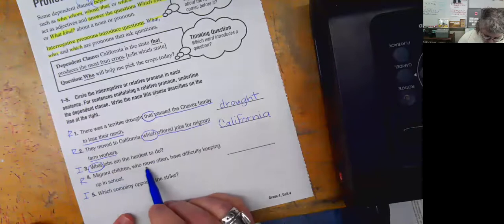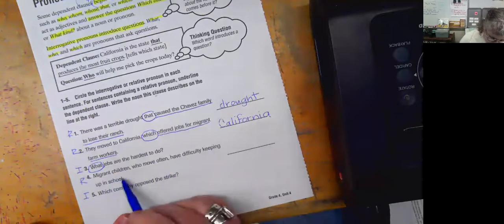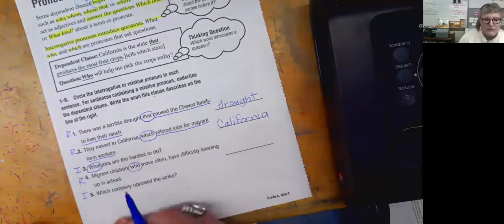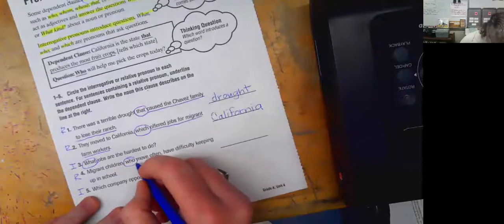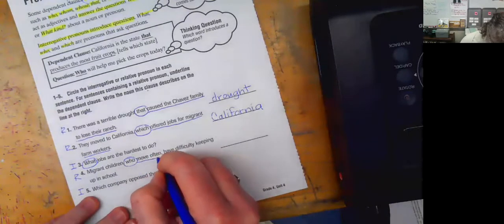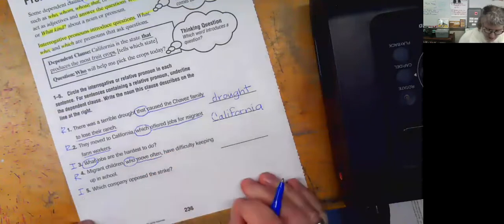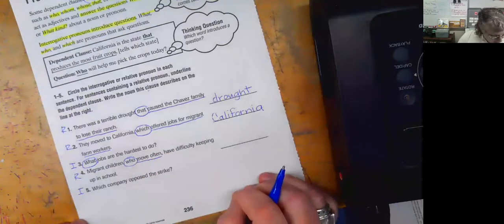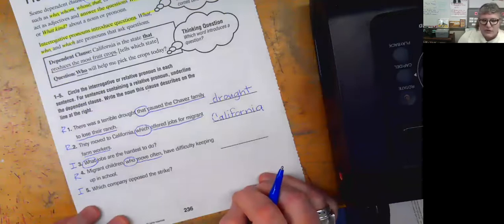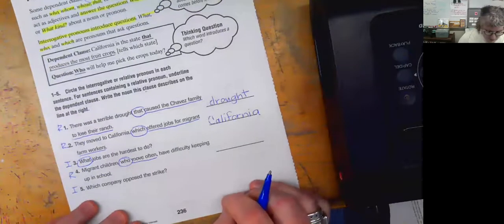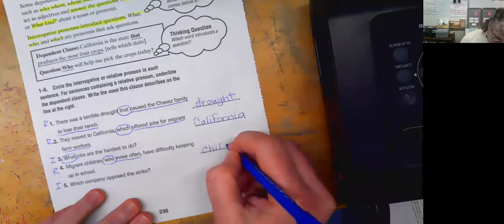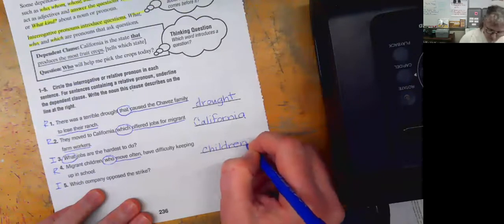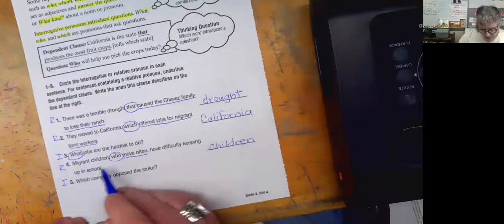Migrant children who move often have difficulty keeping up in school. Who? And this is the only part right here because there's a comma. So it's going to be who move often. And what question or what are we describing there? Well, we're describing children, right? The who is describing children.